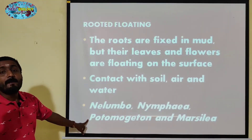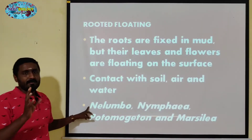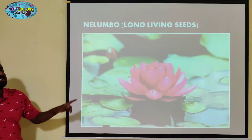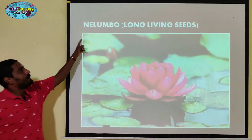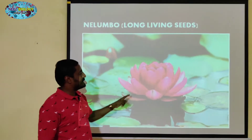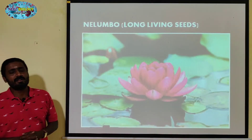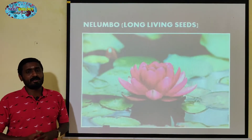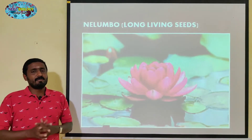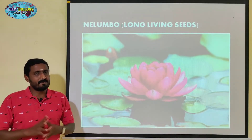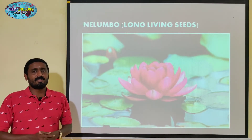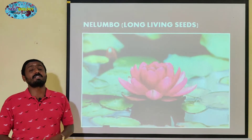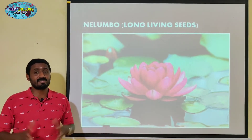Examples are Nymphaea, Potamogeton, and Marsilea. Nymphaea is a type of plant. For example, in summer time — over 6 to 7 months — the leaves undergo changes.